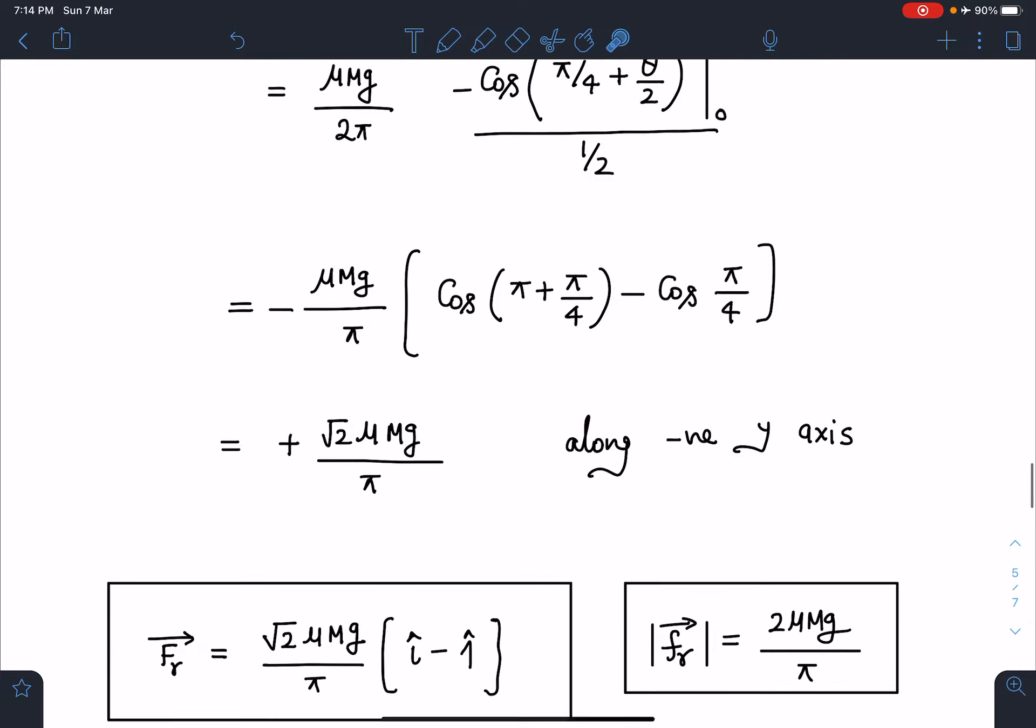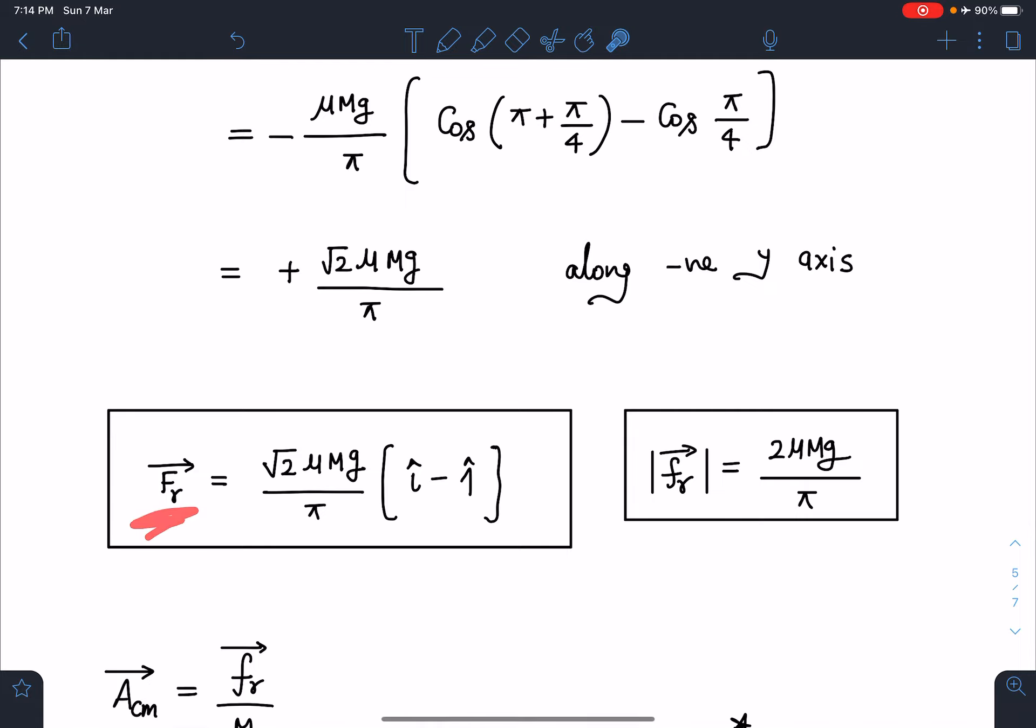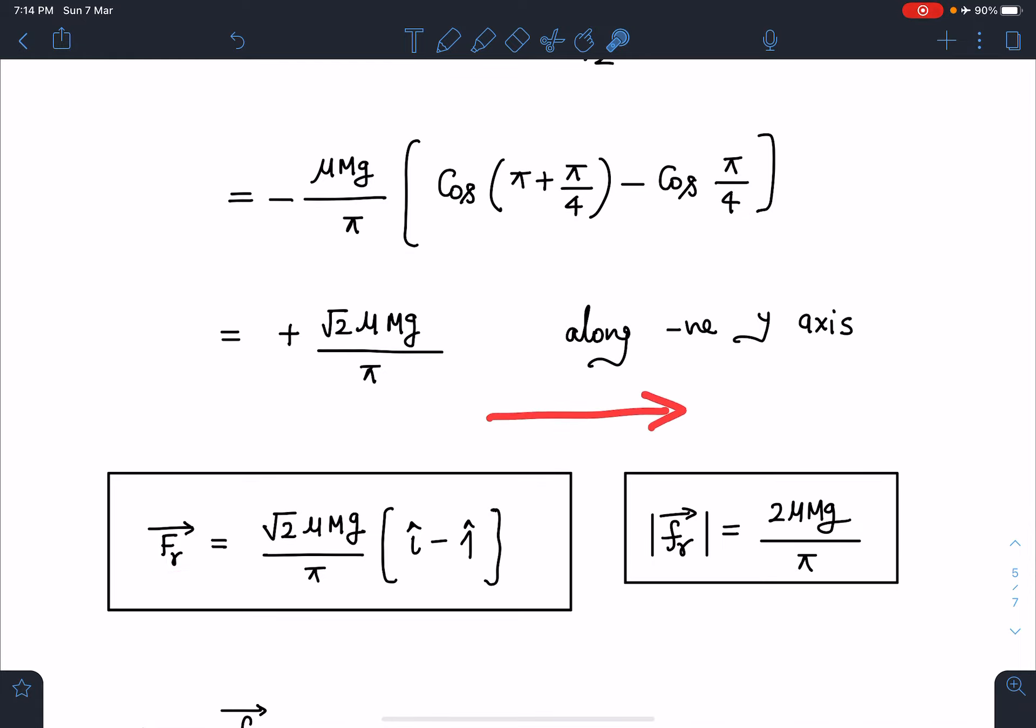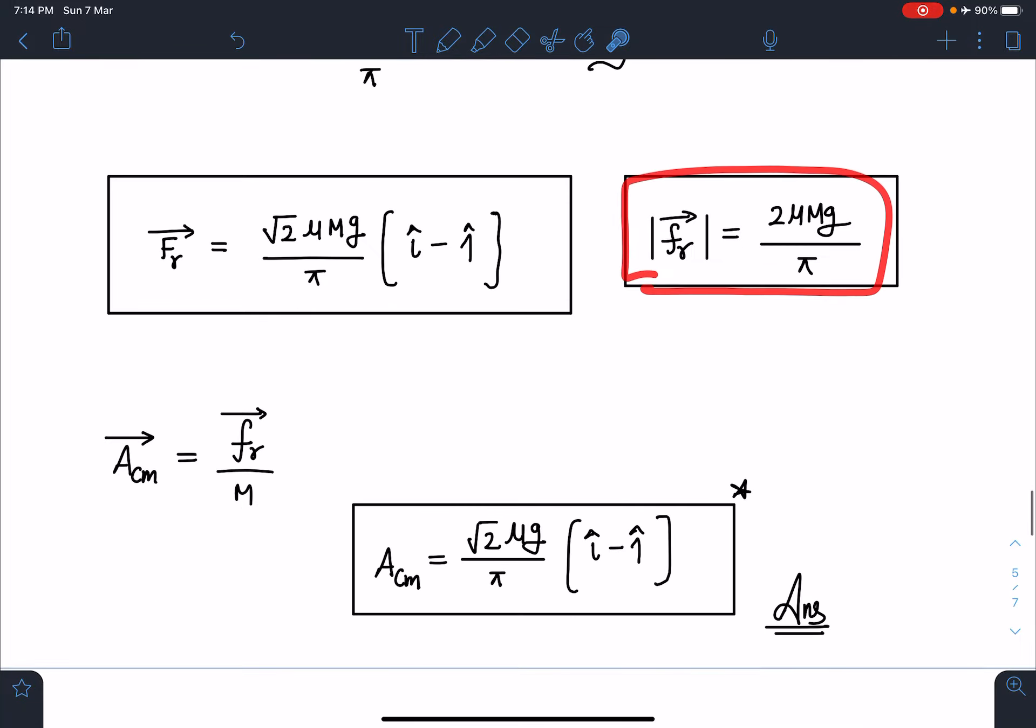Once I know this friction, it is very easy to write it in vector form. The x-component was towards positive x-axis, y-component was towards negative y, so I can simply write this as magnitude √2 μMg/π, and this will become î - ĵ. Magnitude wise it will be 2μMg/π. Divided by mass M is acceleration of center of mass. So vector a_cm will be √2 μg/π (î - ĵ), and this is going to be the final answer for this problem.